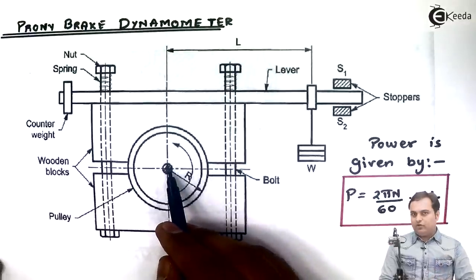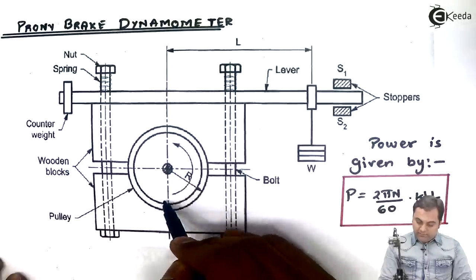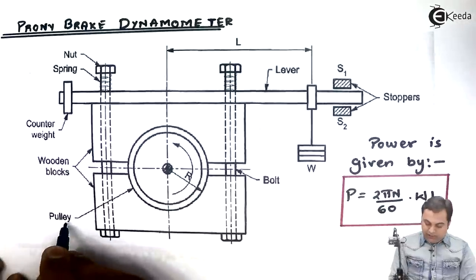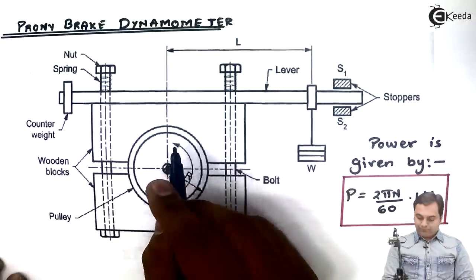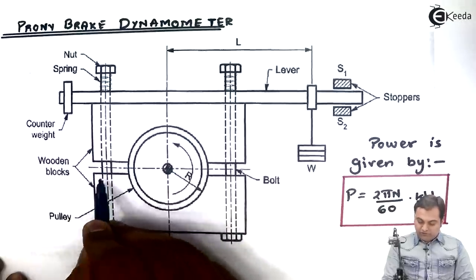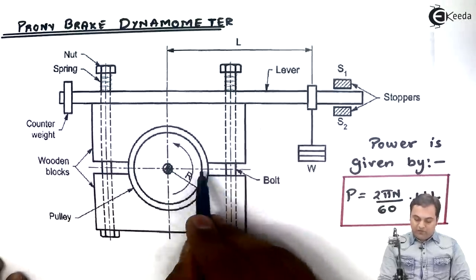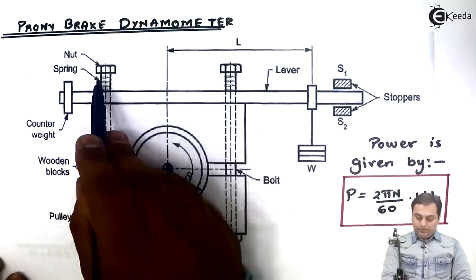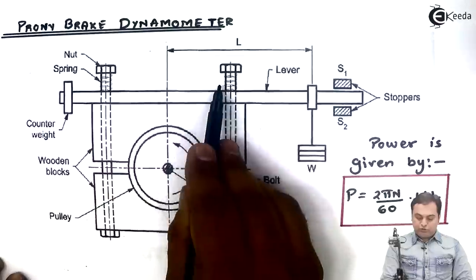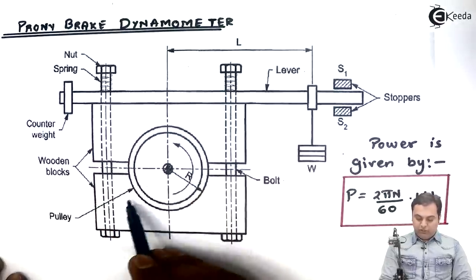We want to measure the power of this shaft, so for that we are mounting a brake drum or pulley over this shaft. Next we have wooden blocks which are mounted just above the pulley. Nuts and bolts arrangement are also provided so that we can adjust the gap between the wooden blocks and the drum.